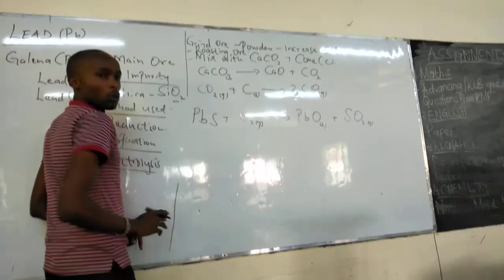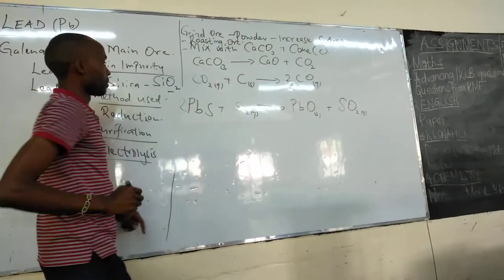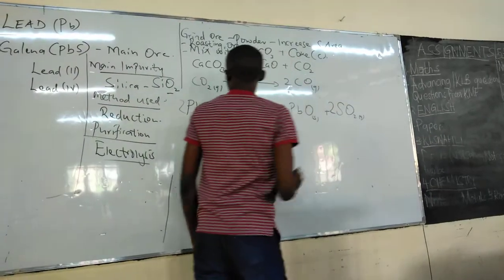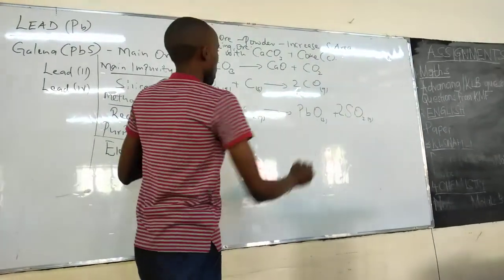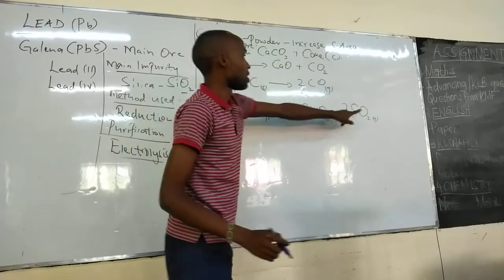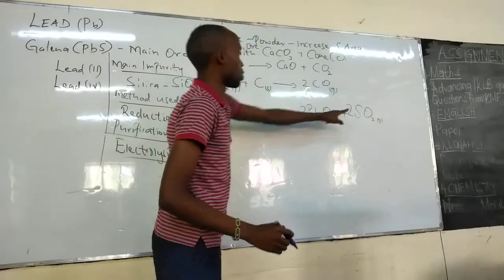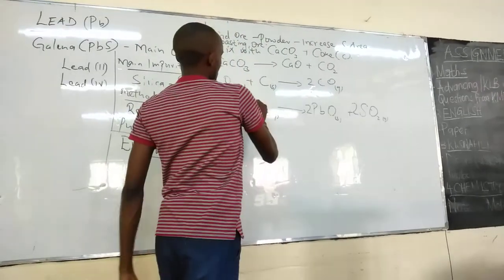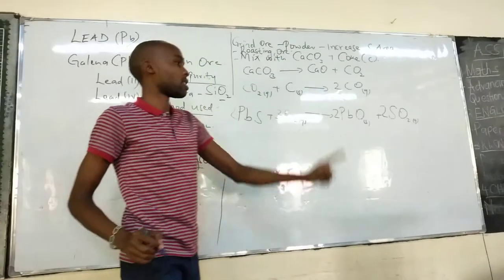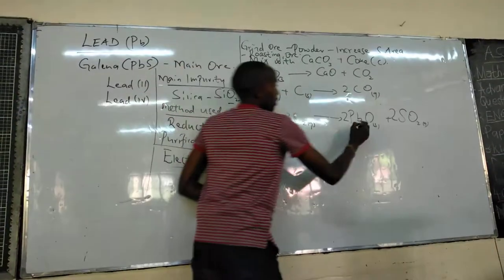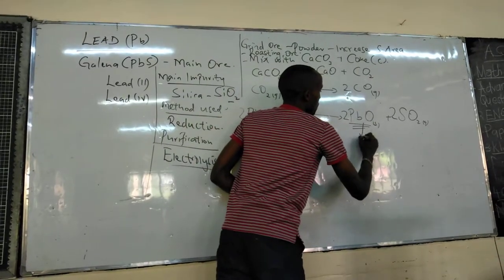Remember, make sure your equations are balanced. With our 2 here, we have to put 2 here, another one here for the sake of lead. So, oxygen we have 6, that is 2 times 2 is 4 plus 2 is 6. And therefore, we have to put 3 at this point. So, from this step, we get lead oxide.